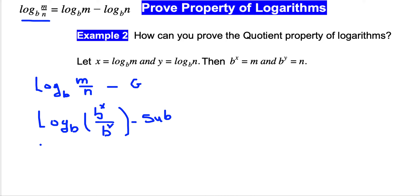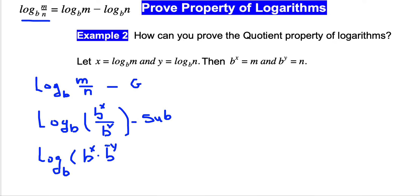According to the exponents property, log base b, we can write this as b^x times b^(-y), since dividing exponents with the same base means subtracting, giving us b^x times b^(-y). This uses the property of exponents.